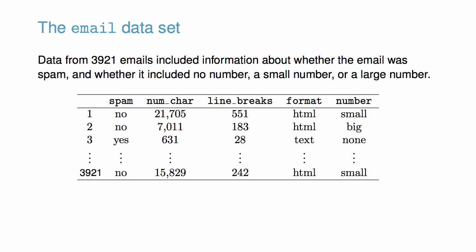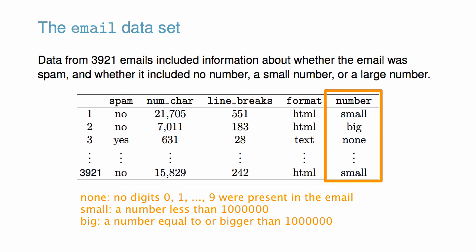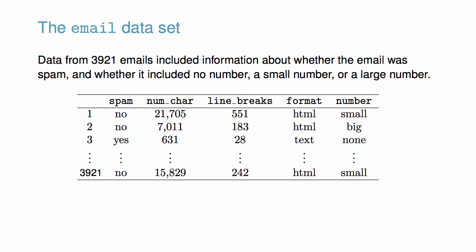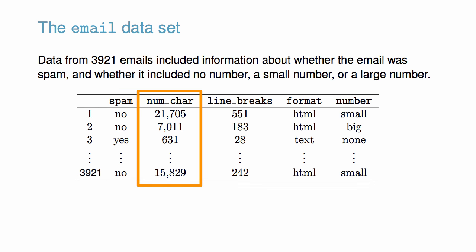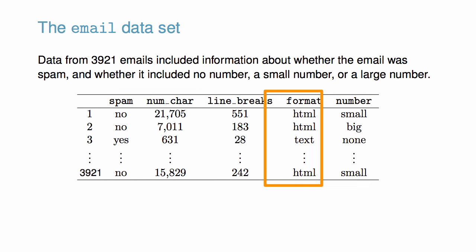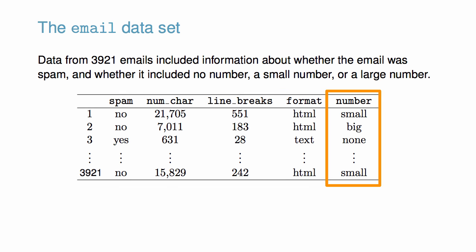Data from 3,921 emails were collected, and included information about whether the email is spam, and whether it included no number, a small number, or a large number within the email. In this table, we can see a few lines from this dataset. The first column reports whether an individual email is spam. The next three columns contain information about the number of characters in the email, the number of line breaks, and the format. Lastly, we see information about what type of number, if any, was included in the email.